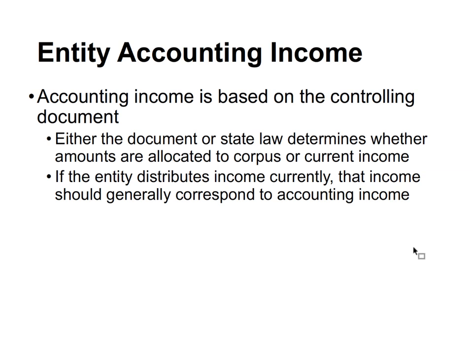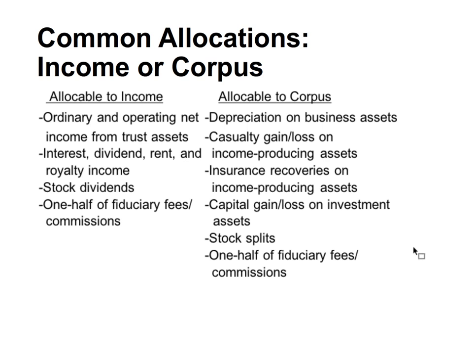If the entity distributes income currently, that income should generally correspond to accounting income. Items allocable to income include ordinary and operating net income from trust assets — interest, dividends, rent, royalty — as well as stock dividends and one-half of fiduciary fees and commissions.